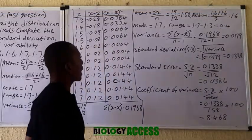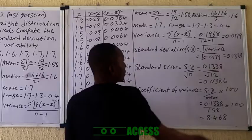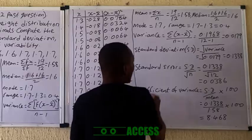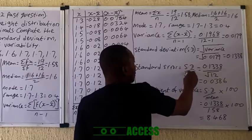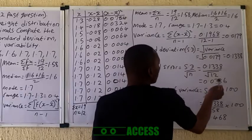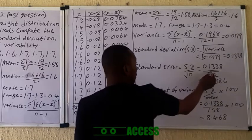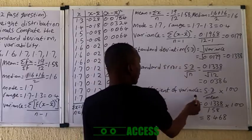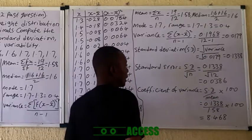Standard deviation is simply the square root of variance — take the square root of the variance value you just calculated. Standard error is the standard deviation divided by the square root of n. Here n = 12, so find the square root of 12, then divide the standard deviation by that value to get the standard error.